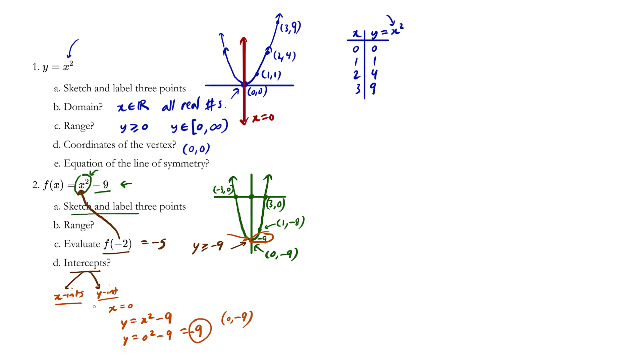What about the x-intercepts? We're going to set y equals 0. So when 0, the y-value, is equal to x squared minus 9, we can factor.